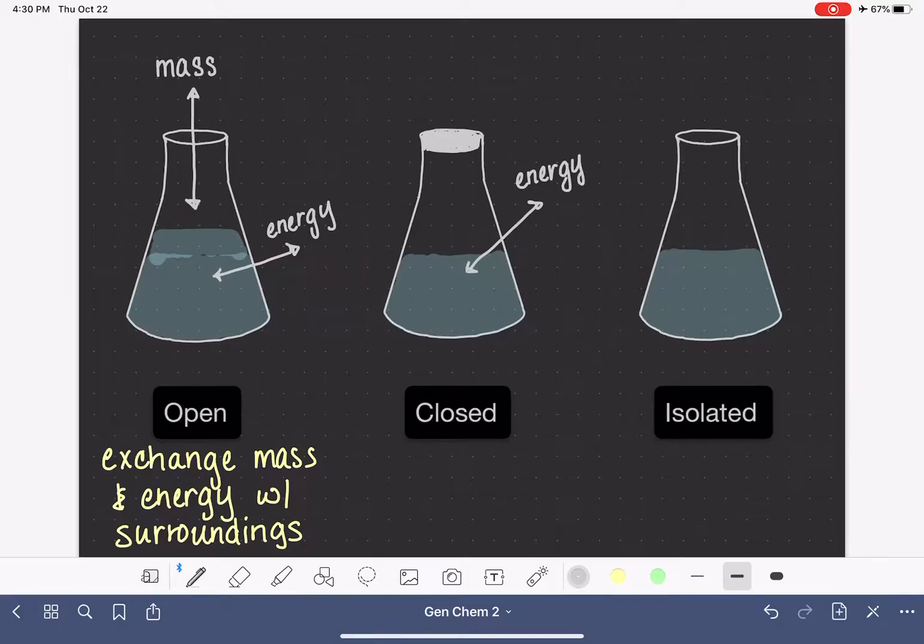But it is still free to exchange energy with the surroundings. As we talked about with the open system, this means that we can heat the closed system up by putting a Bunsen burner underneath it or setting it onto a hot plate. Or if this is an exothermic reaction and we touch it, we'll be able to feel the heat or the energy that is being given off by this process. So a closed system, if we define that, can only exchange energy with its surroundings.